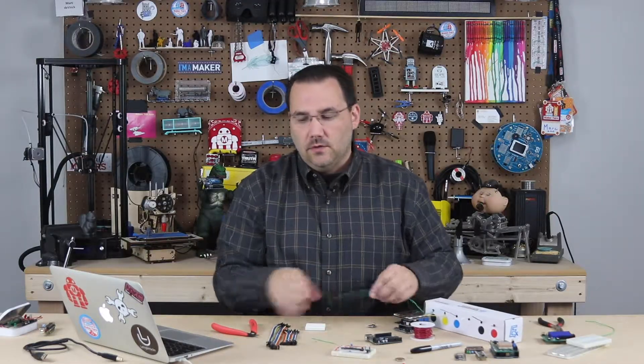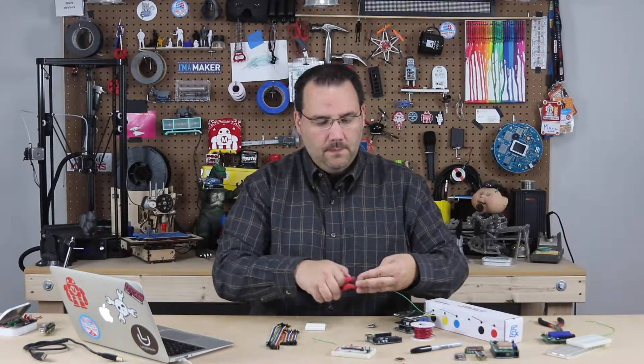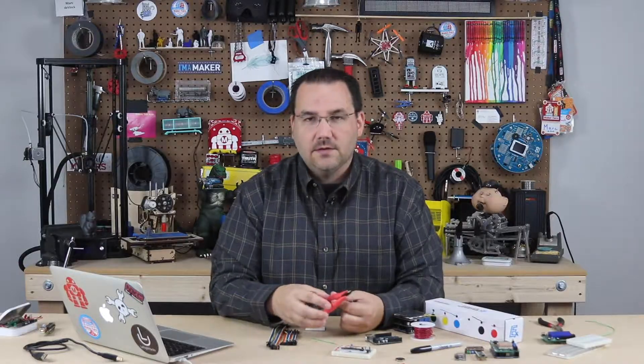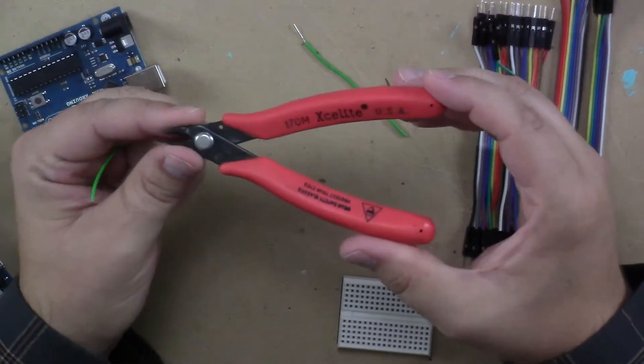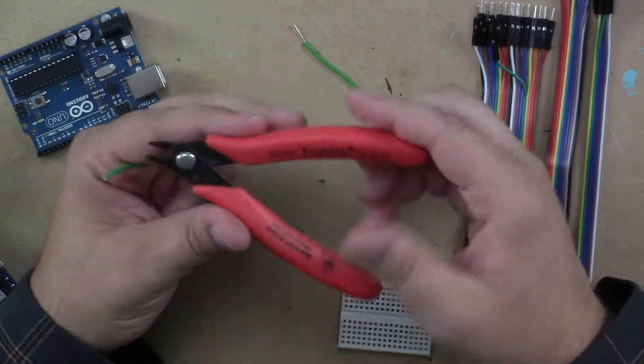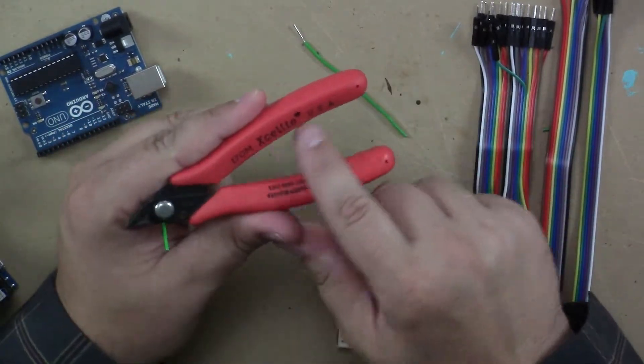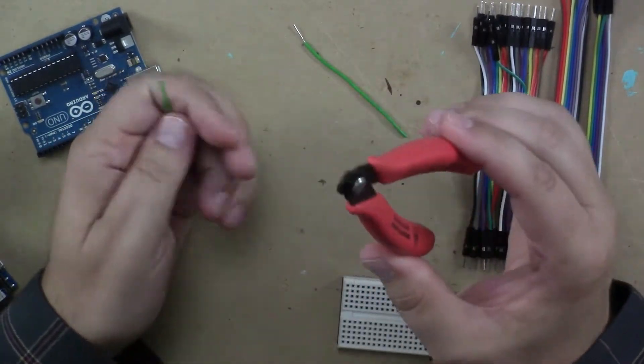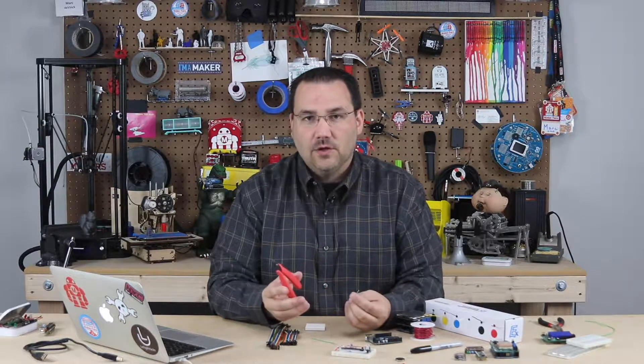Now, how do you create your own jumper wires? I love these pliers. This is my number one tip for making jumper wires. These are fantastic. They're relatively affordable. I believe you pronounce this Excelite, and they are wonderful for making jumper wires.